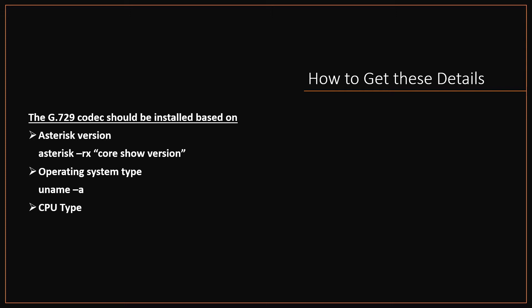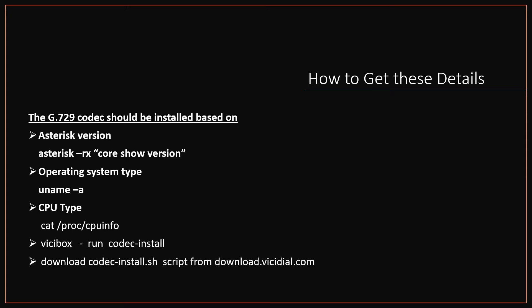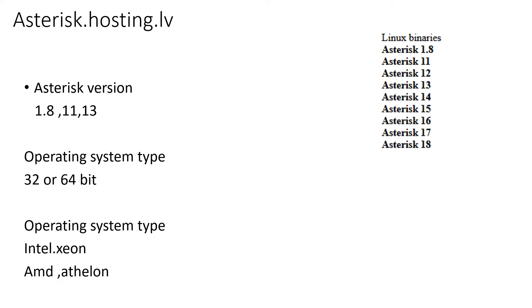For CPU type or make, type 'cat /proc/cpuinfo'. If you're using VCbox, simply type 'codec-install' to get these details and install the G729 codec automatically. You can also download this script from the official VCdial website and use it on other Asterisk servers.